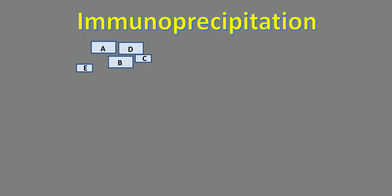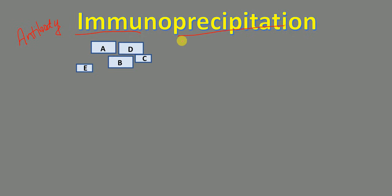In this lecture, we're going to talk about immunoprecipitation and co-immunoprecipitation. The word 'immunoprecipitation' consists of two parts: 'immuno,' meaning related to immunity, and 'precipitation.' In this technique, we use an antibody for the precipitation, which is why it's called immunoprecipitation.